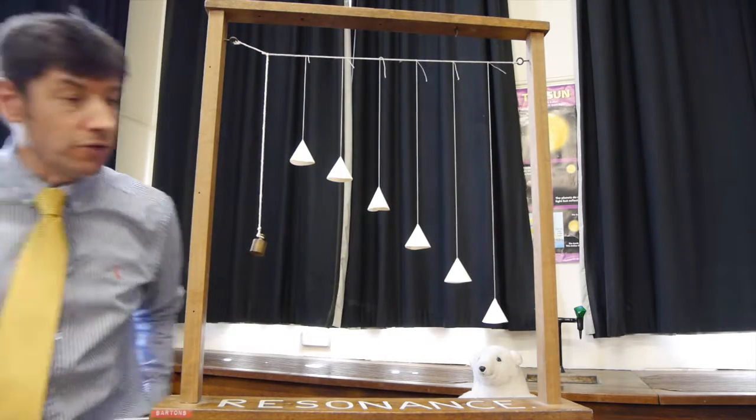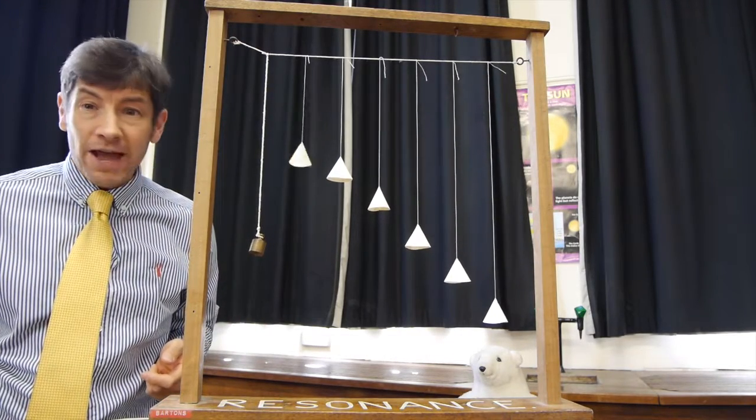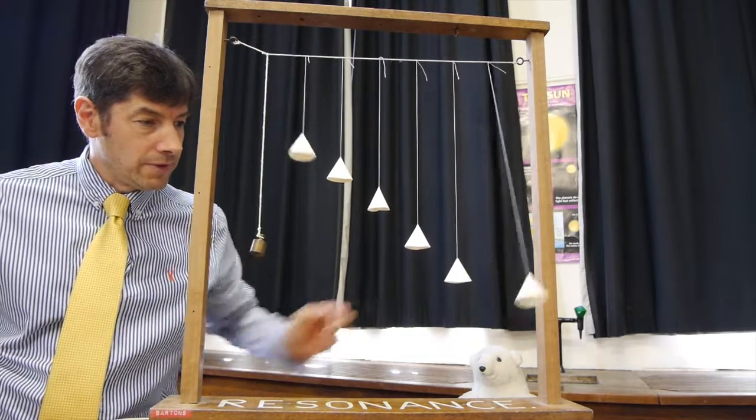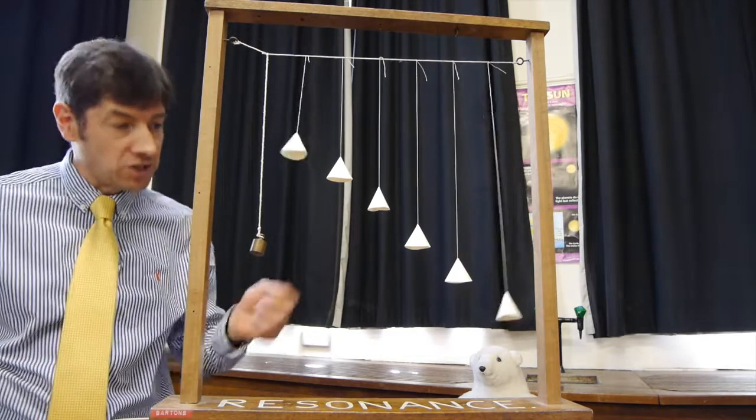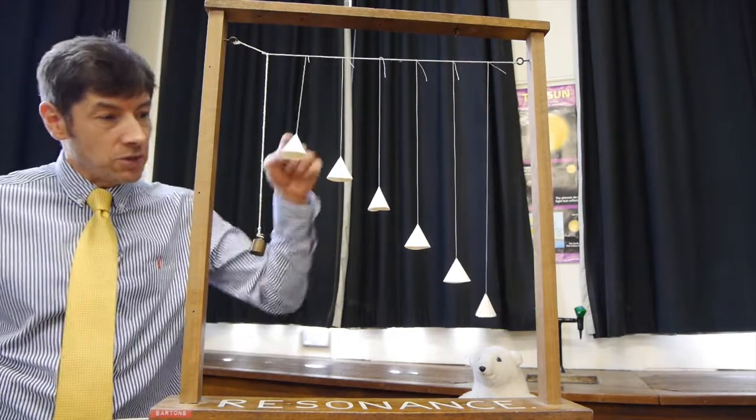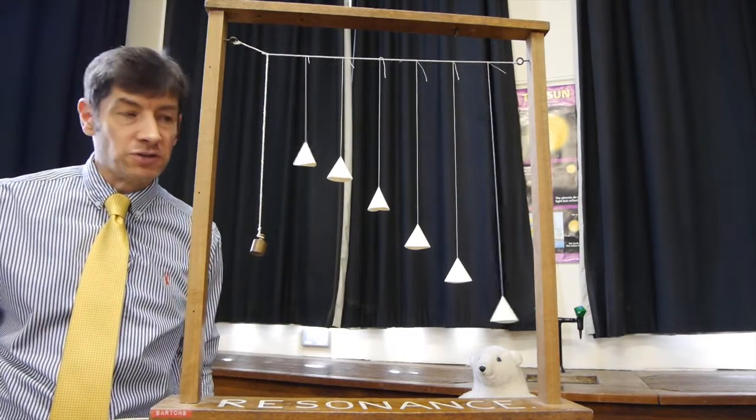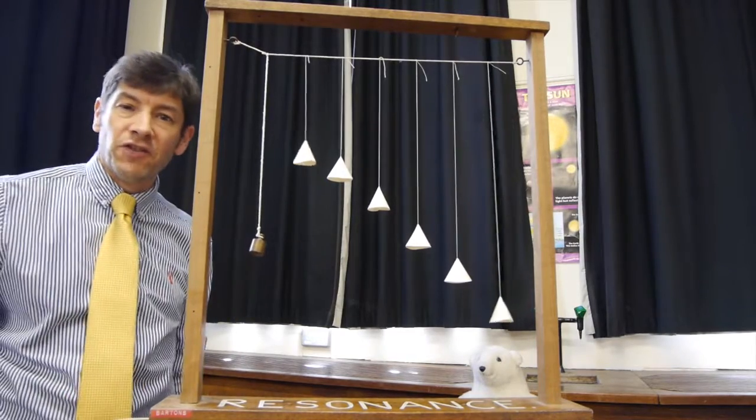But the important thing is that if I swing the little short one, it swings up and down very rapidly, and if I swing the very long one, it swings up and down with a lower frequency. It doesn't go from side to side quite as rapidly. So each one of these lengths has a different natural frequency, a high frequency for the short one and a low frequency for the long one.